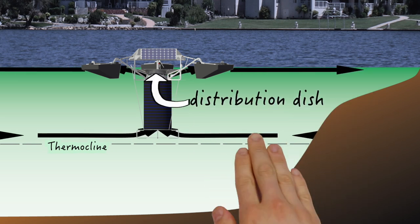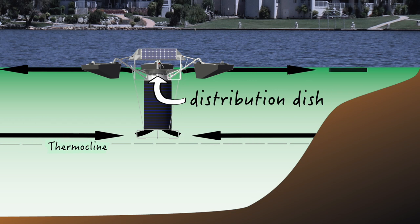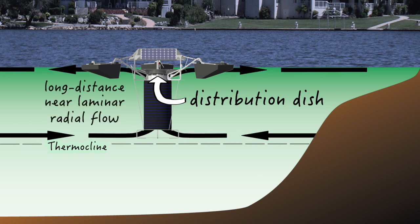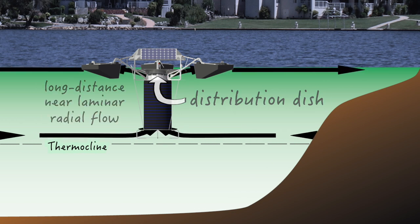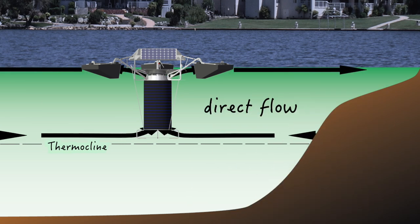And once it reaches the surface, the distribution dish starts to direct long distance near laminar flow radially away from the Solar Bee. This is known as direct flow.